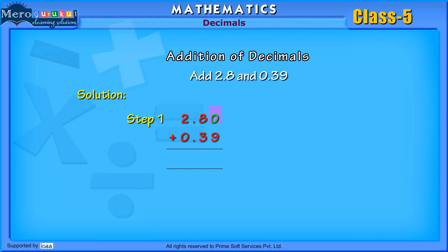Then, we add the tenths. 2.8 plus 0.39 is equal to 3.19.